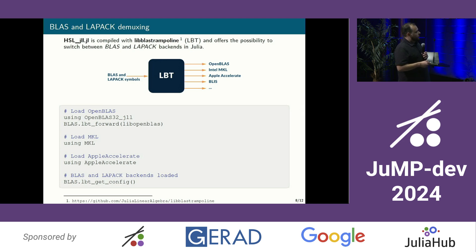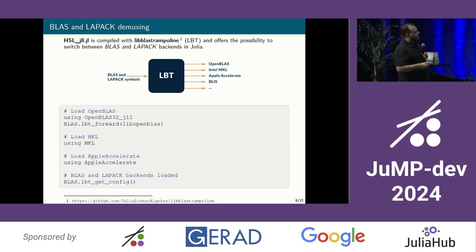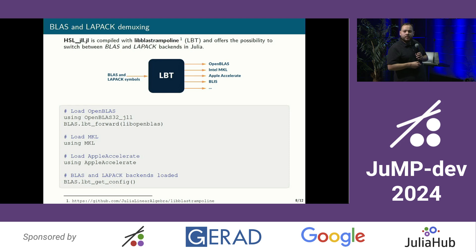But if you have an Intel chip or you're using the new Apple M chips, you can just use Apple Accelerate or MKL to get more efficient BLAS and LAPACK routines. You can have a significant speedup just by using a BLAS or LAPACK version that is optimized for your platform. If you're using an AMD chip, you also have optimized BLAS and LAPACK libraries, and you can provide the path for your platform. Recently, I tried the new architecture developed by NVIDIA — they released a new CPU chip and also have their own BLAS, NVBLAS — and I was able to try HSL_jll on this new platform directly.